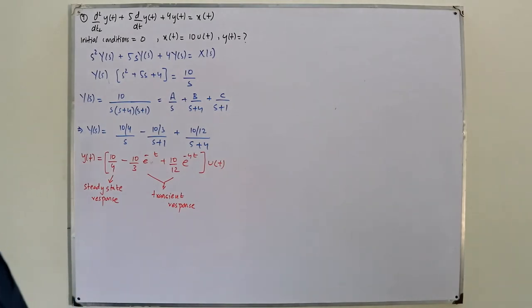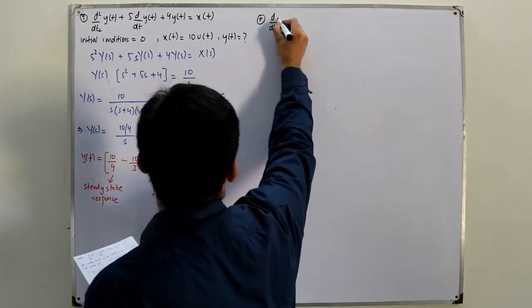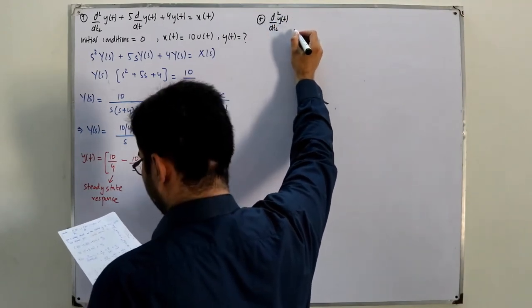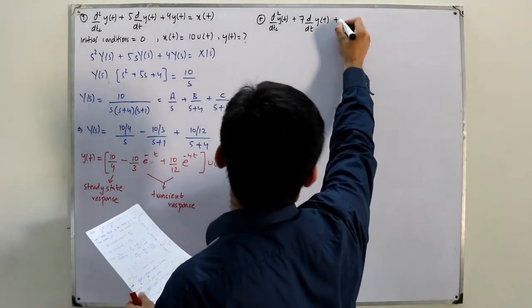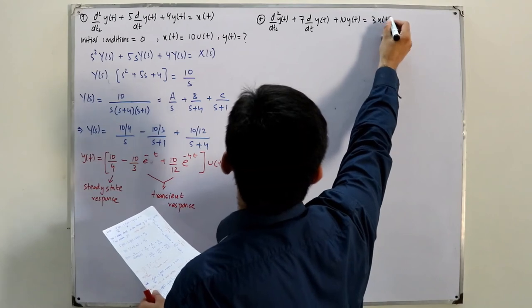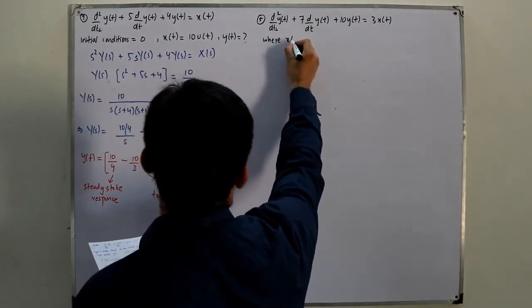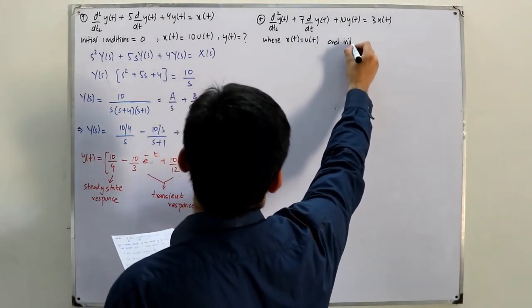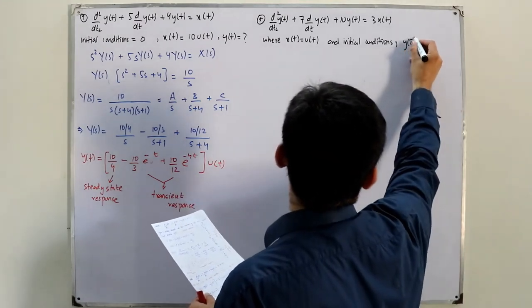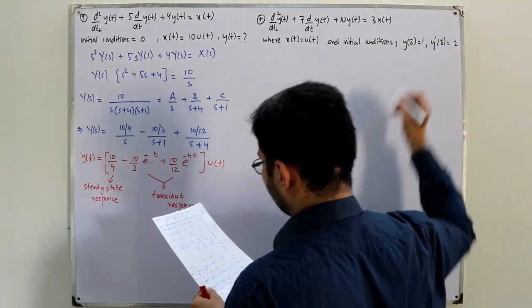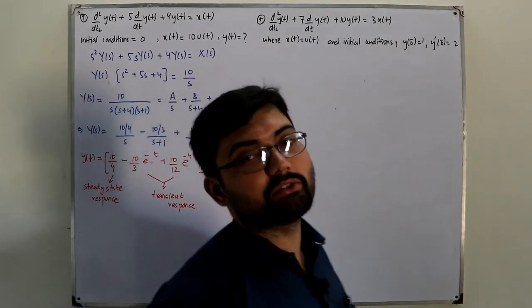Example number five: y''(t) + 7y'(t) + 10y(t) = 3x(t), where x(t) = u(t), and initial conditions are given as y(0⁻) = 1 and y'(0⁻) = 2.